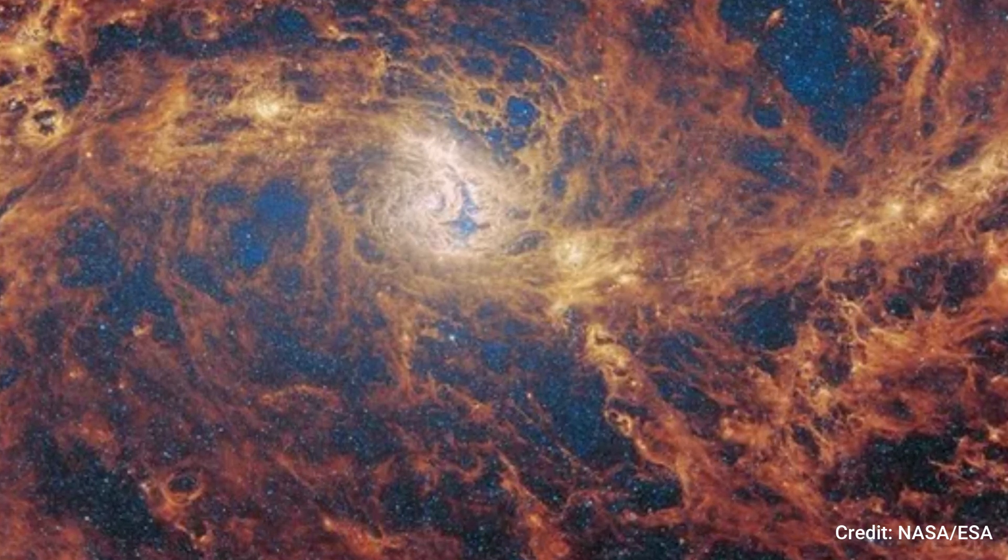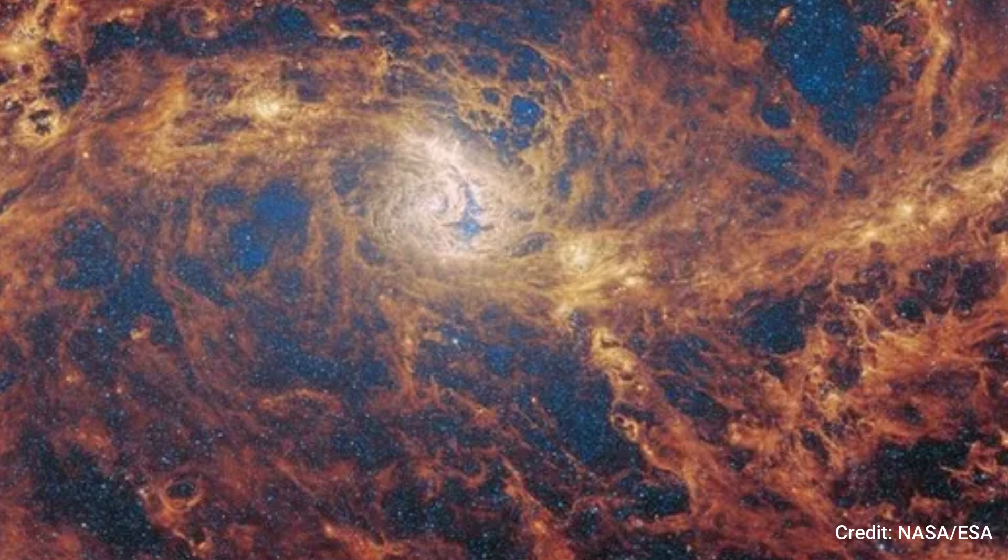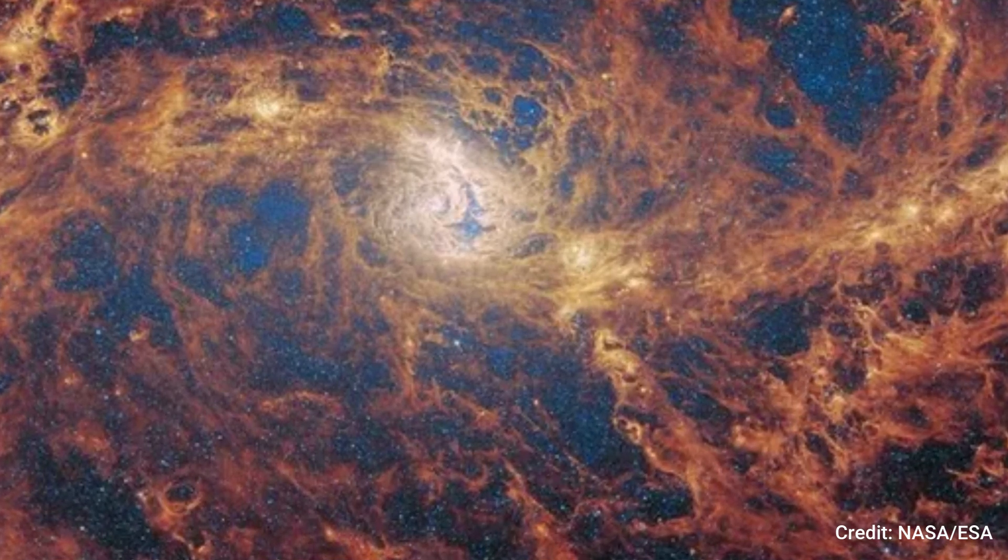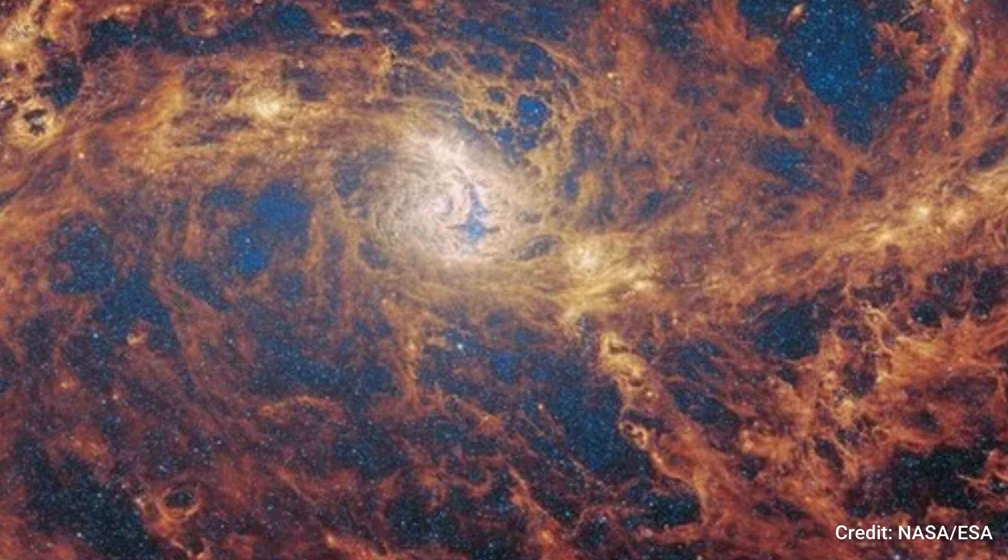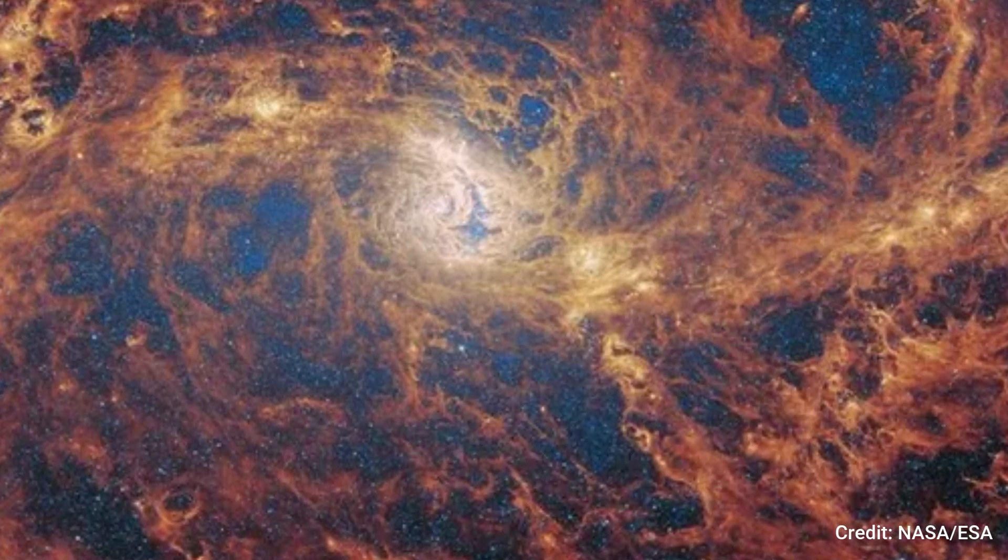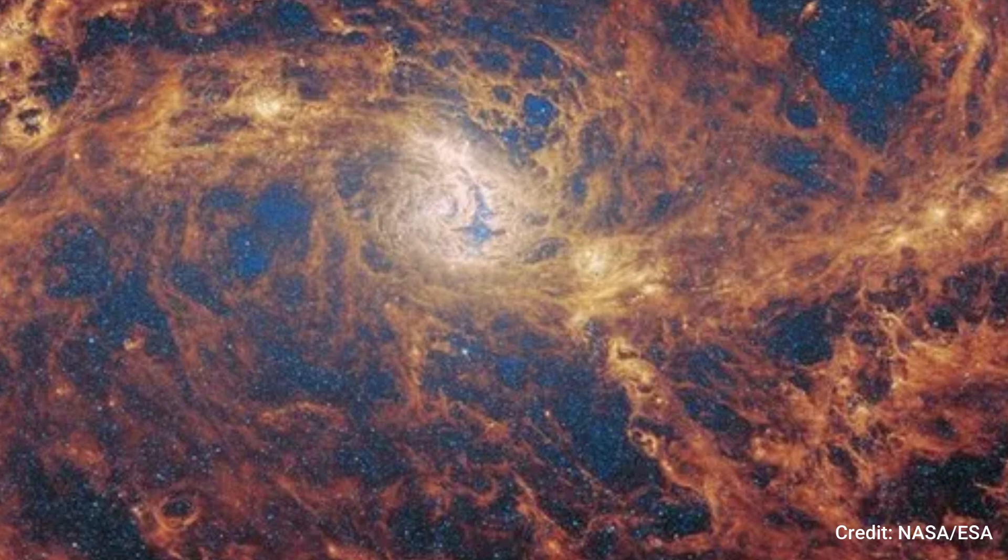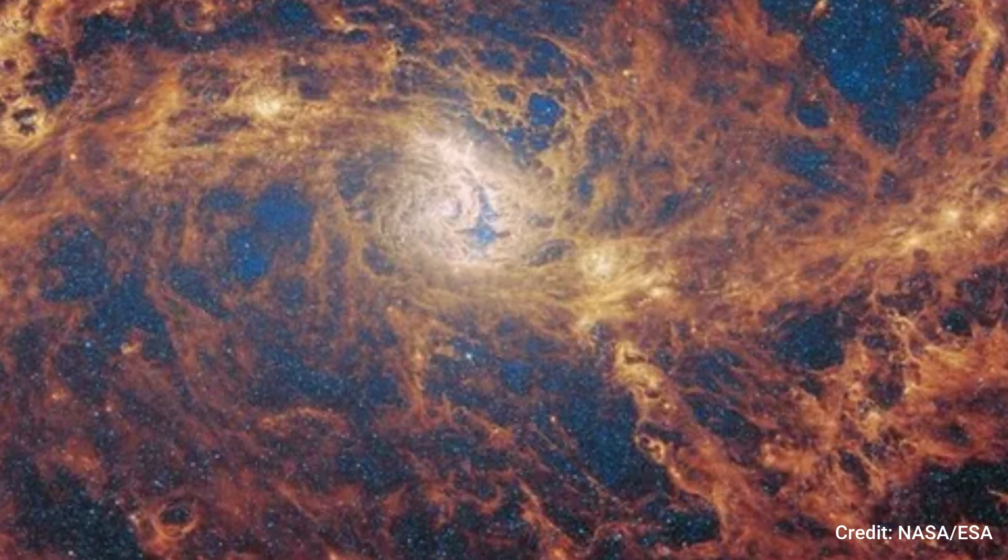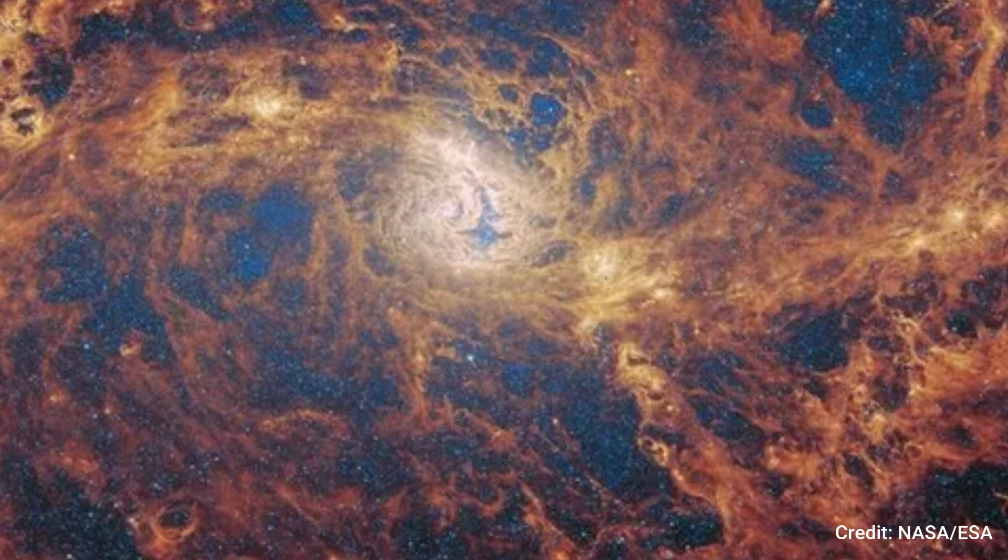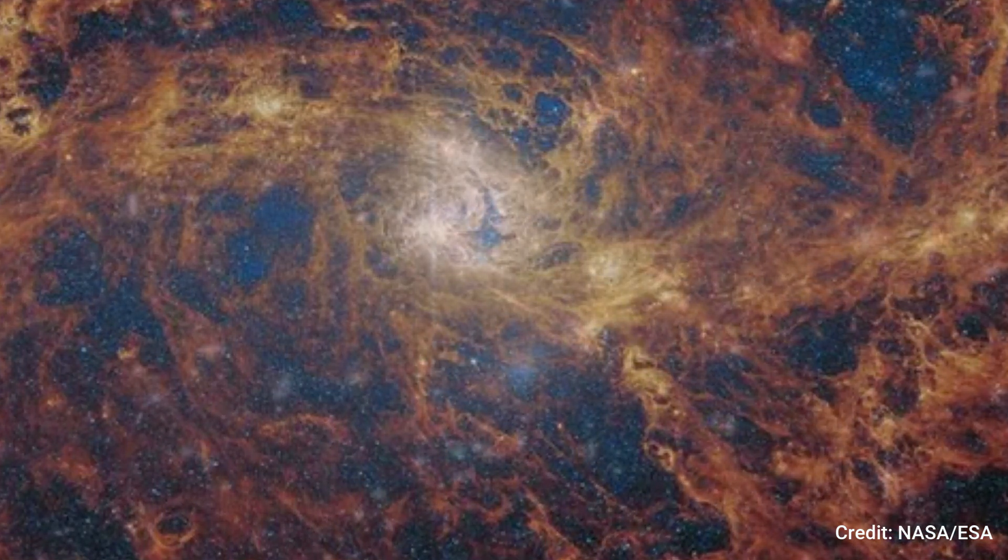Within the image, vibrant blue regions at the core signify clusters of dense stars within M83's galactic nucleus. Golden filaments emanate outward, indicating stellar nurseries where new stars are actively taking shape. Meanwhile, the fiery orange-red streaks highlight areas abundant in polycyclic aromatic hydrocarbons, compounds ideally detectable by MIRI's wavelengths.